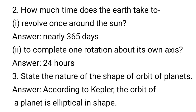2. How much time does the Earth take to: (i) Revolve once around the Sun? Answer: Nearly 365 days. (ii) Complete one rotation about its own axis? Answer: 24 hours. 3. State the nature of the shape of the orbit of planets. Answer: According to Kepler, the orbit of a planet is elliptical in shape.